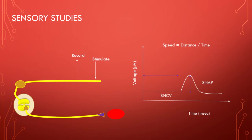For sensory studies, stimulating distally and recording proximally is an orthodromic study. We know the time point of stimulation and the takeoff point where the signal appears. Using a tape measure, we calculate the distance between those two points and determine the speed — distance divided by time — giving us the sensory nerve conduction velocity. The peak of the signal gives us the sensory nerve action potential (SNAP) amplitude. These are the two main parameters.